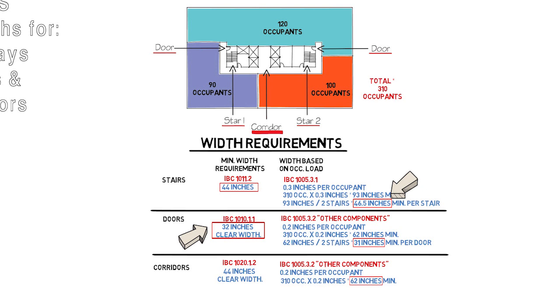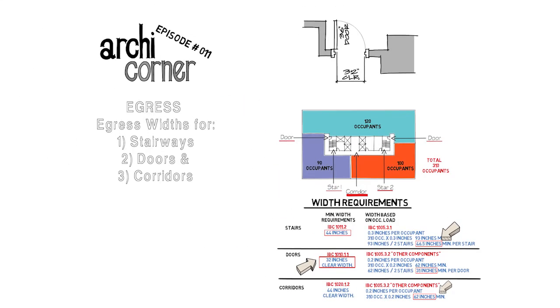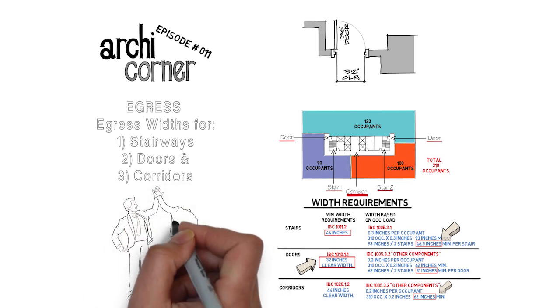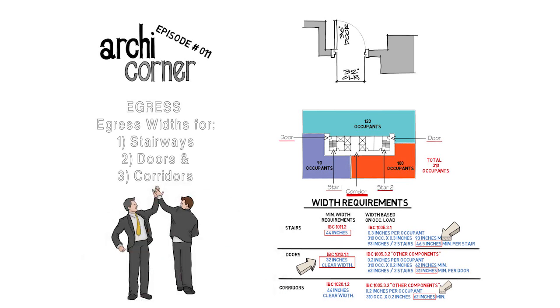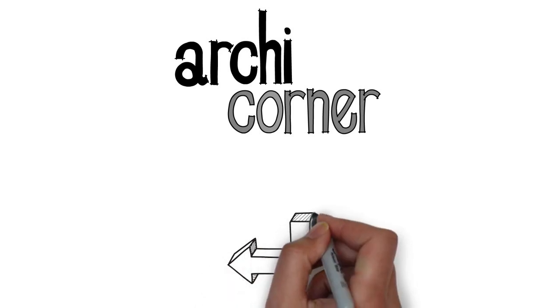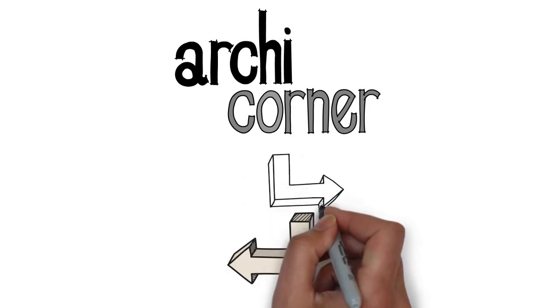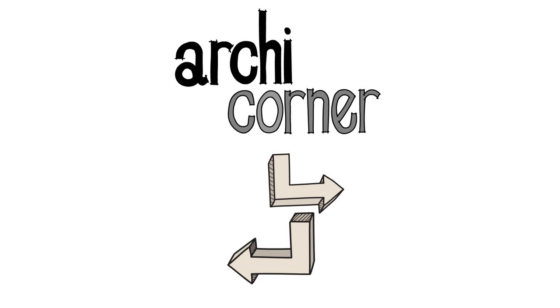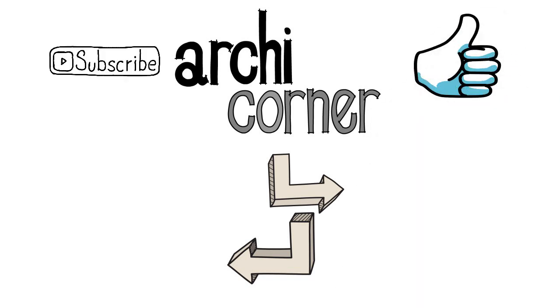The most stringent requirement in this case would be the minimum width required for corridors based on occupancy load. And those are the basics of egress widths. As with all codes, there are exceptions and special circumstances that may provide different requirements. I hope you liked this video. As always, thank you for watching — I hope it helped you. Here are a couple more videos that might give you more information: the one on the left talks about occupancy loads and how to calculate them, and the one on the right talks about door clearances. If this video helped you, please give me a thumbs up and subscribe. This is Archie Corner signing out.